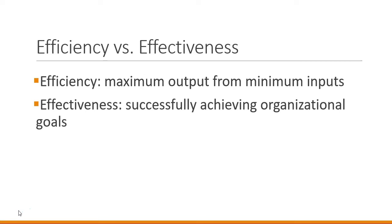In managing, it's important to understand the difference between efficiency and effectiveness. Efficiency is getting things done with the least cost possible — maximum output from minimum inputs. Effectiveness is achieving goals successfully. These two often conflict: we can be effective but not efficient, achieving a goal at very high cost; or efficient but not effective, managing costs well but failing to achieve organizational goals. So it's important to develop a balance between efficiency and effectiveness. This concludes part one of Introduction to Management, and we will continue with the video for part two.